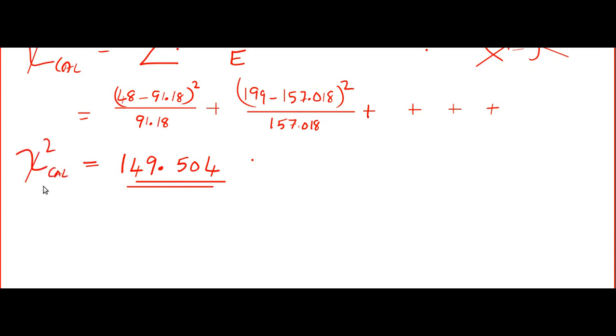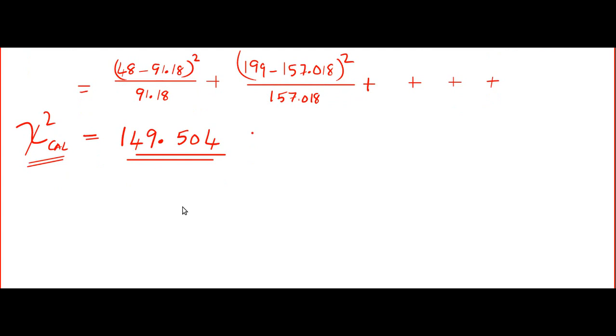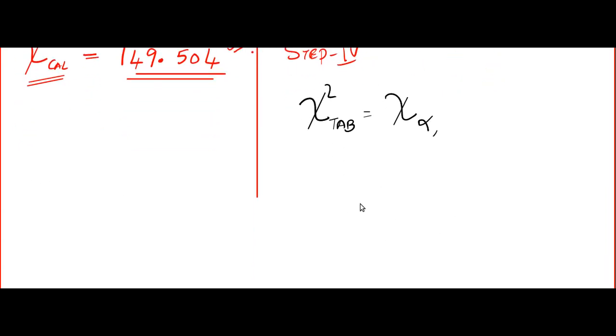And the answer is 149.504. It takes time, but try it yourself. And if you want, you can find more questions in the handbook and in the workbook. Please do practice 2, 3 questions. The questions are in the part 4 exercise of the workbook. Okay. And as usual, step number 4. Tabulated value. So, we write chi square tabulated. The format of chi square is alpha comma. And remember, in chi square and ANOVA, there is no two tail, one tail. It will be always one tailed. And the graph of chi square, I will show you. It is like this. You can check the graph in the handbook.